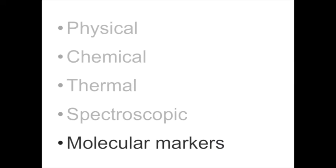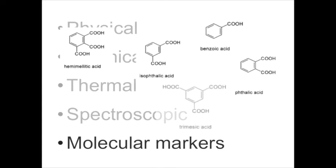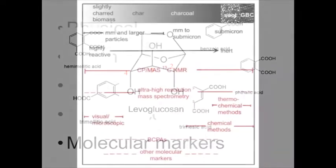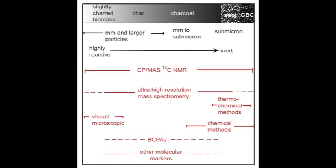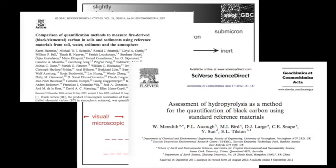Molecular markers are identifiable molecules that are unique to pyrogenic carbon. Mixed samples can be decomposed by chemical or thermal techniques to liberate those molecular markers, which can then be identified and quantified to give an estimate of pyrogenic carbon in the sample. All of these methods have pros and cons, and some are more appropriate for different applications than others. There are several reviews and comparisons of these methods in the literature.